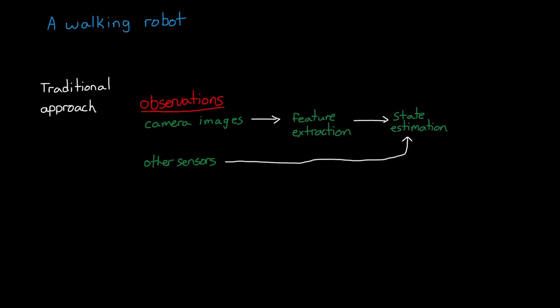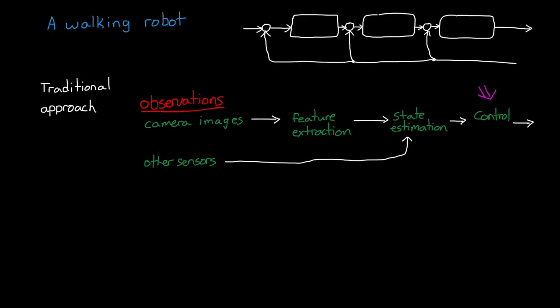Let's start by thinking about the complexity of building a walking robot from the perspective of a traditional controls approach. We might use cameras to view the environment and then extract image features that can be converted into signals like position or locations of obstacles. We could combine those observations with other sensors that complete the state estimation, which we then use, along with a model of the plant and environment, to design the control system.